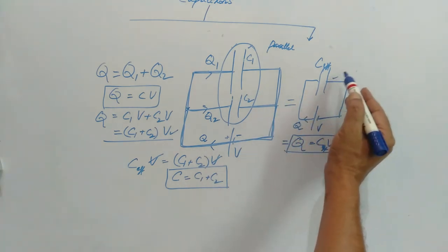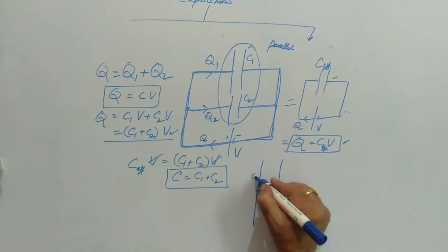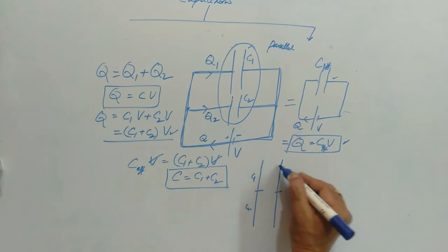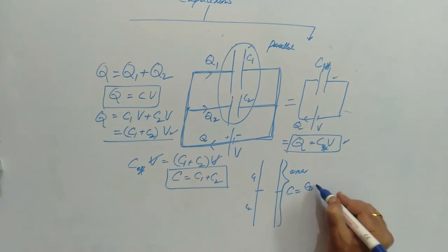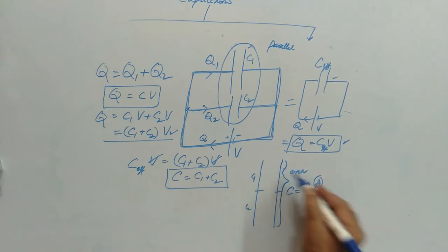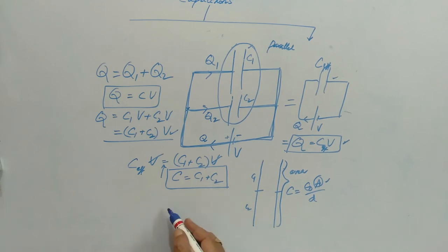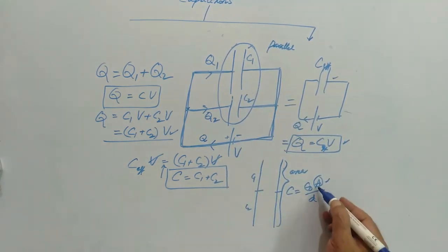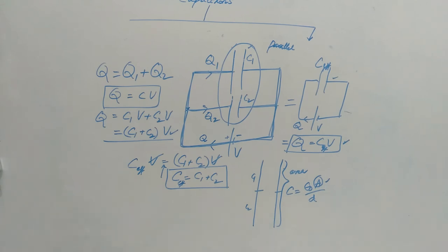This can also be understood intuitively. In parallel, both capacitors are placed side by side — you are not increasing the distance between plates, but you are increasing the effective area. Since C = ε₀A/D, as area A increases the capacitance increases, giving C_eff = C1 + C2. For two identical capacitors each of capacitance C in parallel, the total area becomes 2A, so C_eff = 2C.